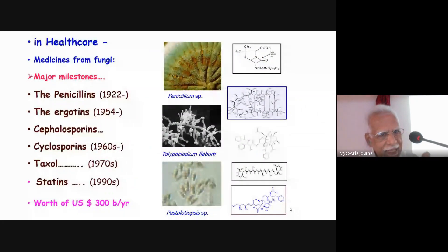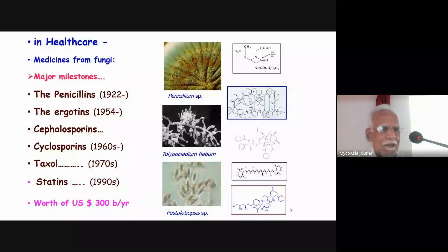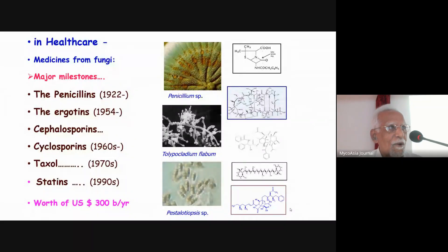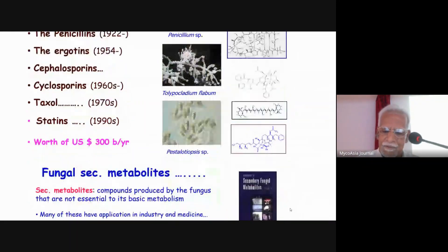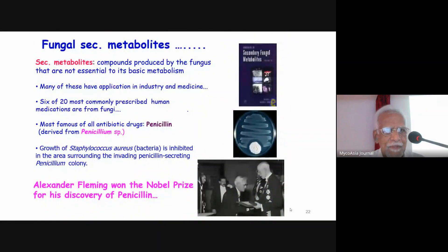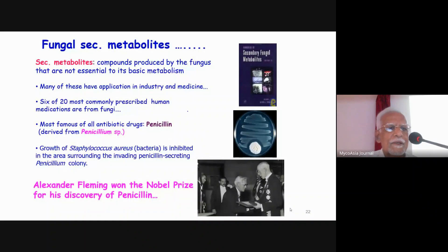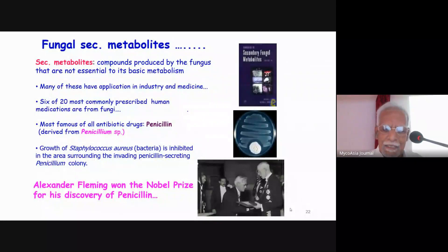Major milestones in healthcare include the discovery of penicillins, ergotins, cephalosporins, cyclosporins, taxol, statins — everything are fungal products. Major drugs produced by a variety of fungi. Fungal secondary metabolites are compounds produced by an organism that are not really essential for its growth but have lots of applications. Six out of 20 most commonly prescribed human medicines are from fungi. The most famous, of course, is penicillin — Alexander Fleming received the Nobel Prize for that discovery.